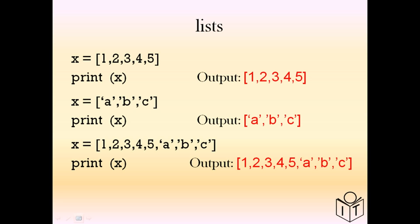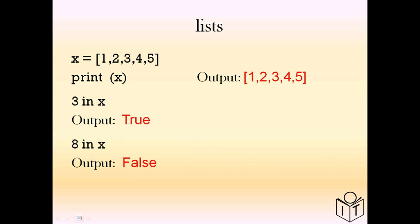We can use the keyword 'in'. So here we have x = [1, 2, 3, 4, 5]. We can say '3 in x' and we will get boolean True. And '8 in x' is False.